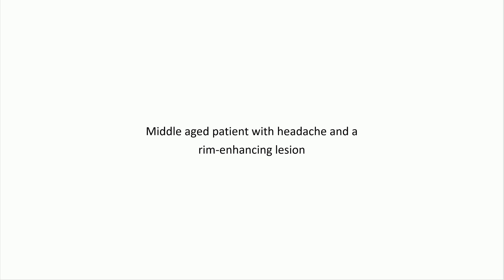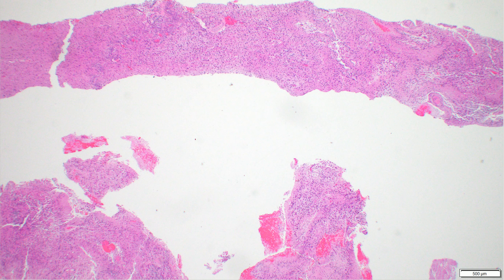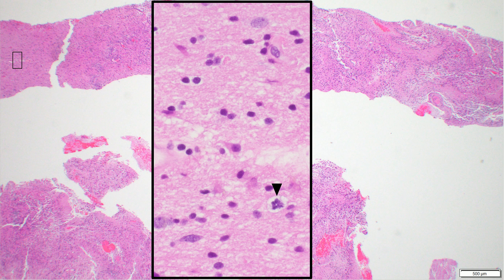So what we have is biopsy tissue from a stereotactic biopsy with a few fragments. This picture has quite a bit of information. Looking in the top left-hand corner, we can see that the brain tissue has neurons here, characterized by round ovoid egg-shaped nuclei with a prominent nucleolus. And we can see these irregular, atypical cells that are kind of elongated, and there's also a mitotic figure right here.